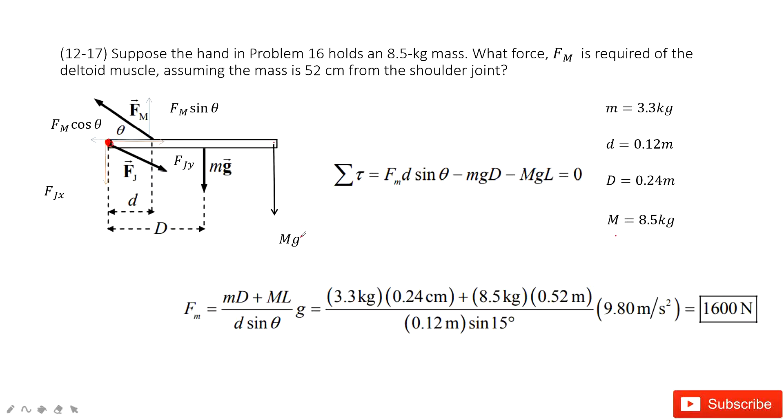And then capital Mg times the length for this beam, for this muscle, or for this arm. Now this torque equal to zero.